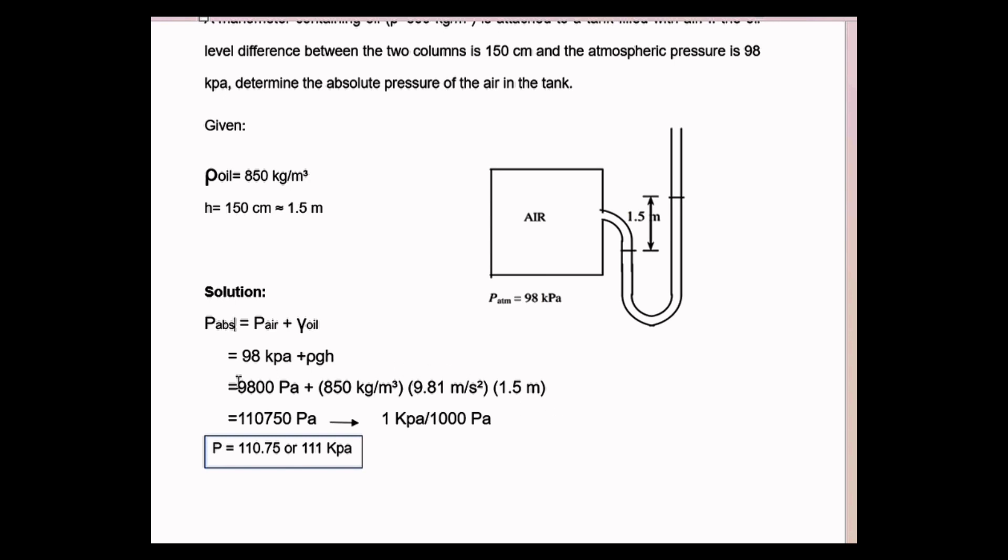So now we need to plug it into our calculator. We get 110,750 Pa, or by converting it into kPa we need to divide this by 1000 and we get 110.75 or 111 kPa.